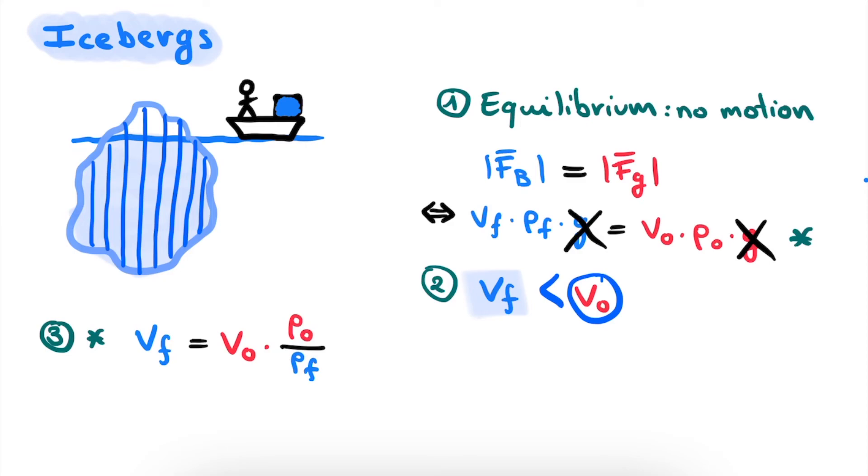And then we look up the specific values. We know that the density of ice, so rho O, is equal to 917 kilograms per cubic meter. And the density of seawater is equal to 1030 kilograms per cubic meter. If we now fill in these values in our equation, we find that Vf, so the volume that is submerged by the water is equal to the total volume multiplied by 0.89.